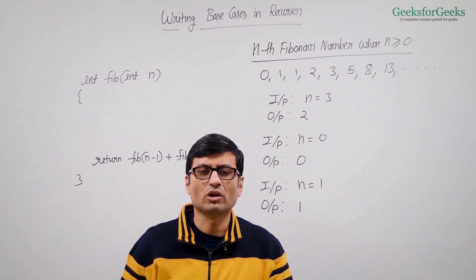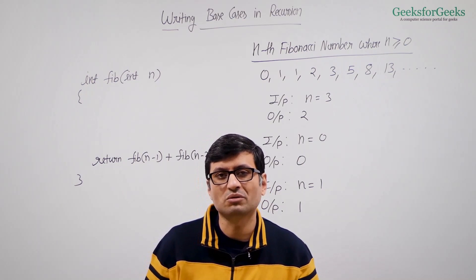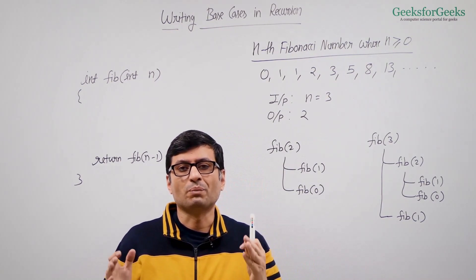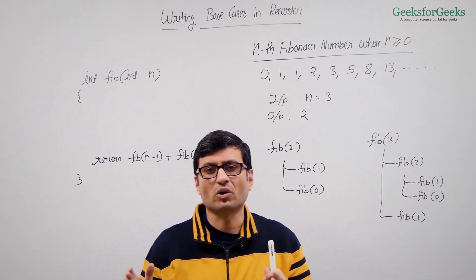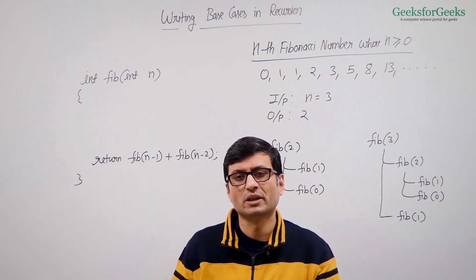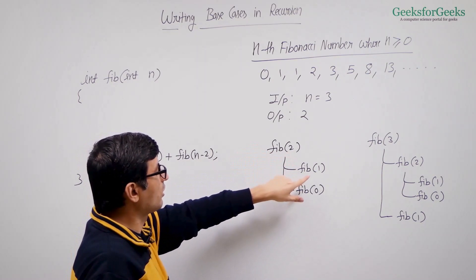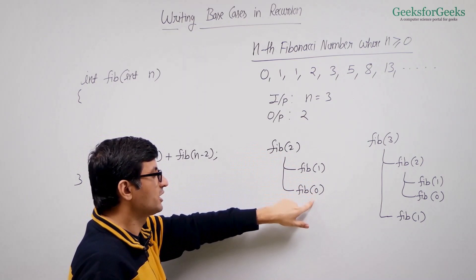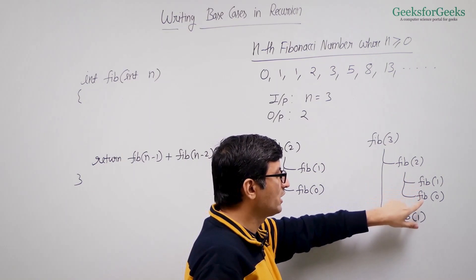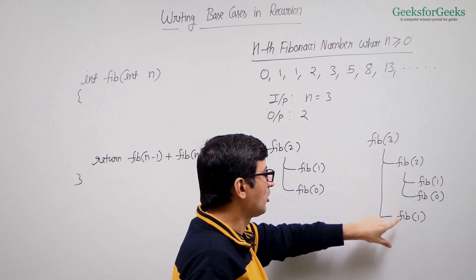The base cases must handle those inputs for which we cannot further break the problem into smaller sub-problems. Looking at some example recursive calls: when we have Fibonacci(2), we call for Fibonacci(1) and Fibonacci(0). When we have Fibonacci(3), we call for Fibonacci(2) — which calls Fibonacci(1) and Fibonacci(0) — and also Fibonacci(1).